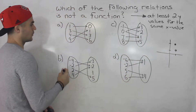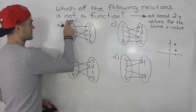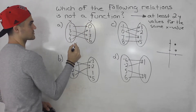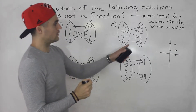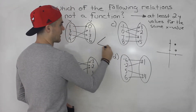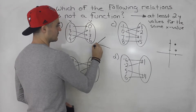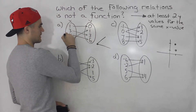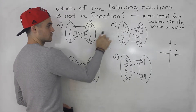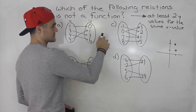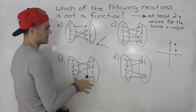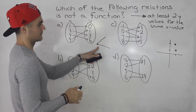With these mapping diagrams, these are the x values and these are the y values. What you want to look for is this pattern where you have a single x value in this set and that single x value has two y values — or at least two; there could even be three or four. So out of all of these, where do you see this pattern?